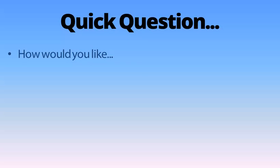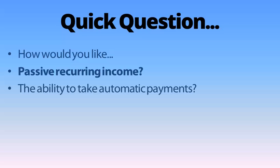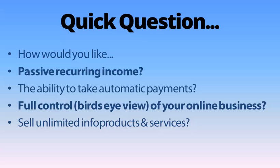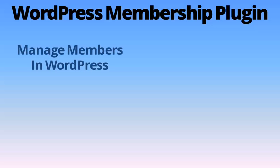Quick question: how would you like passive recurring income, the ability to take automatic payments, having full control and a bird's eye view of your entire online business, the ability to sell an unlimited number of information products, home study courses, reports, videos, and provide as many services as you want — all managed in one place? You can do it all today using our MemberGenius plugin, which installs on top of your brand new or existing WordPress site.